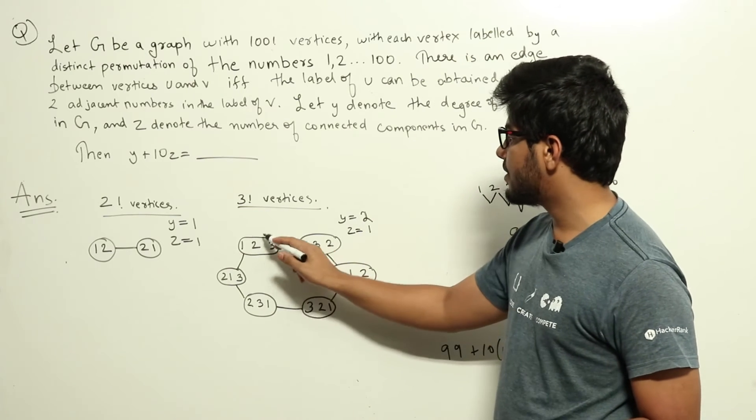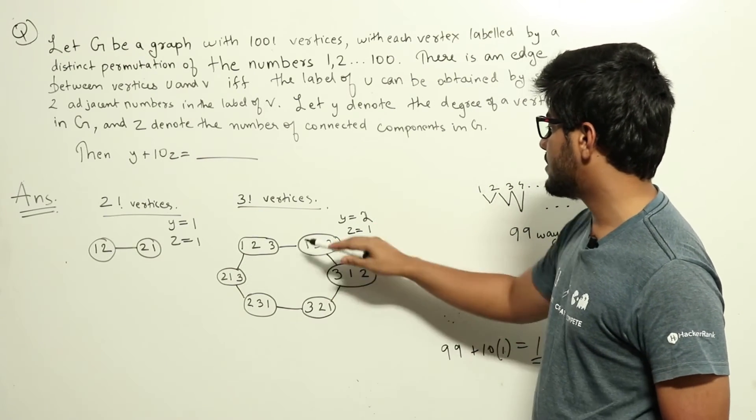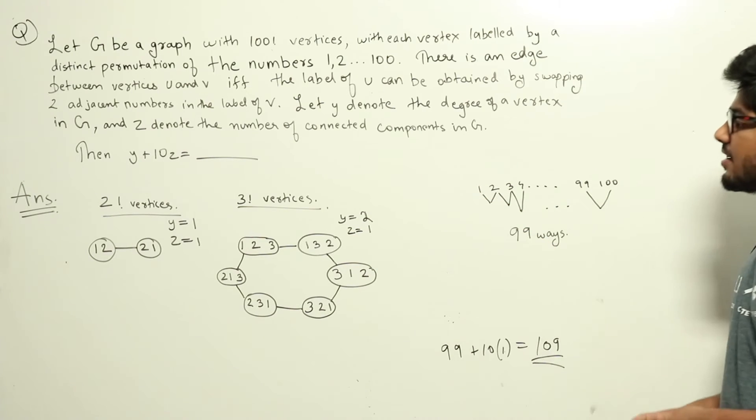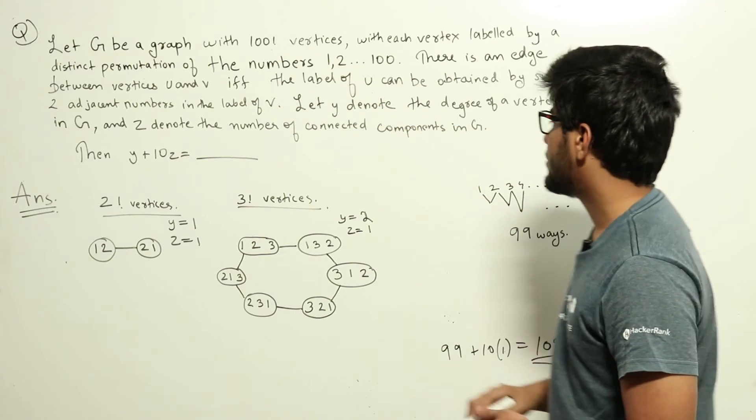Similarly from each node we can try the same and we will see that this is the final graph. So here the degree of each vertex is 2. So y is 2 and z is again 1. This entire thing forms a connected component. So now we can see that patterns are starting to form here.